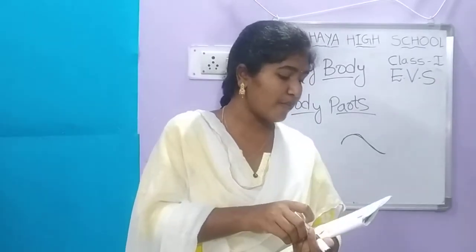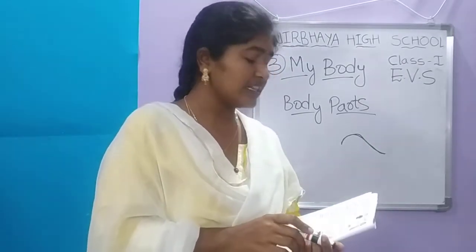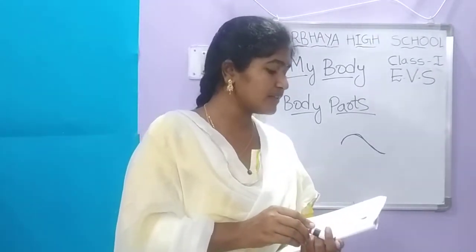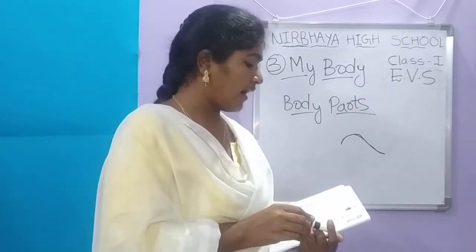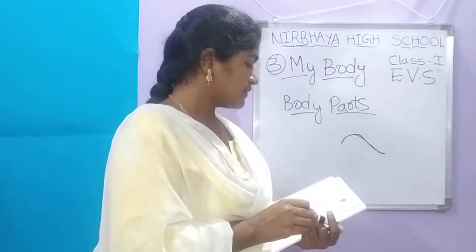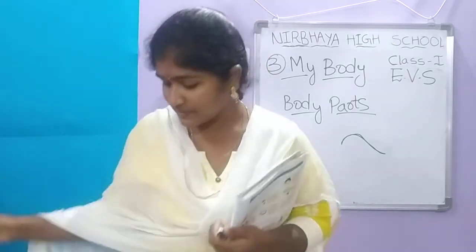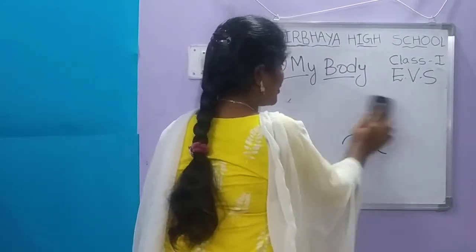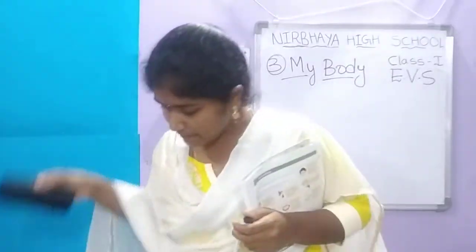The main parts of our body are head, trunk or torso, and limbs — H-E-A-D head, T-R-U-N-K trunk, T-O-R-S-O torso, L-I-M-B-S limbs. We have three main body parts. What are our three main body parts? The main body parts are head, trunk or torso, and limbs.